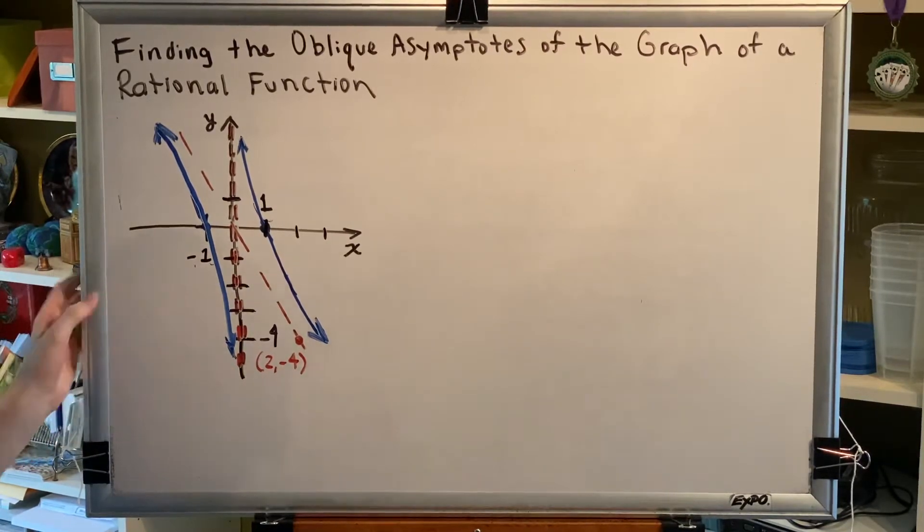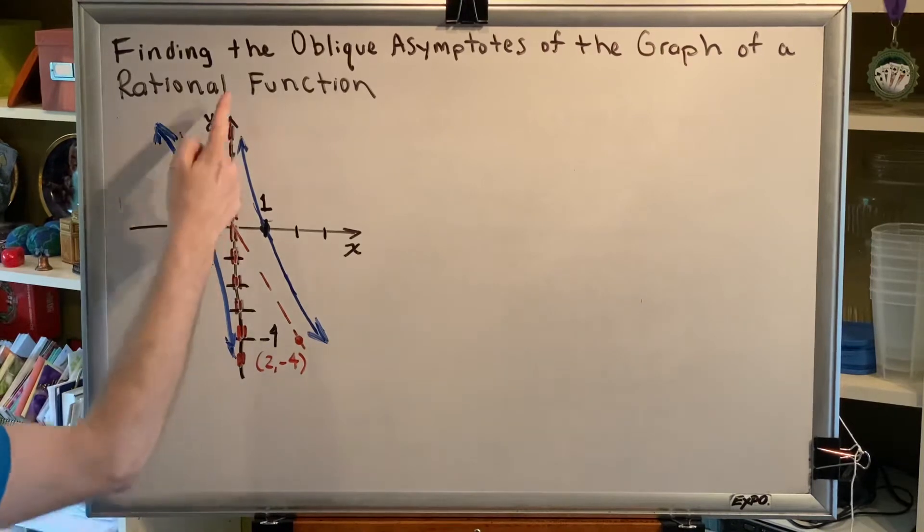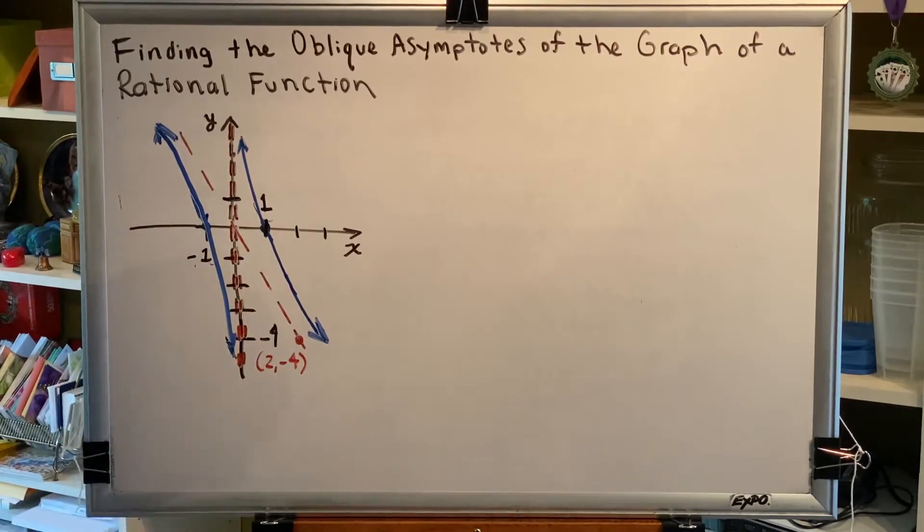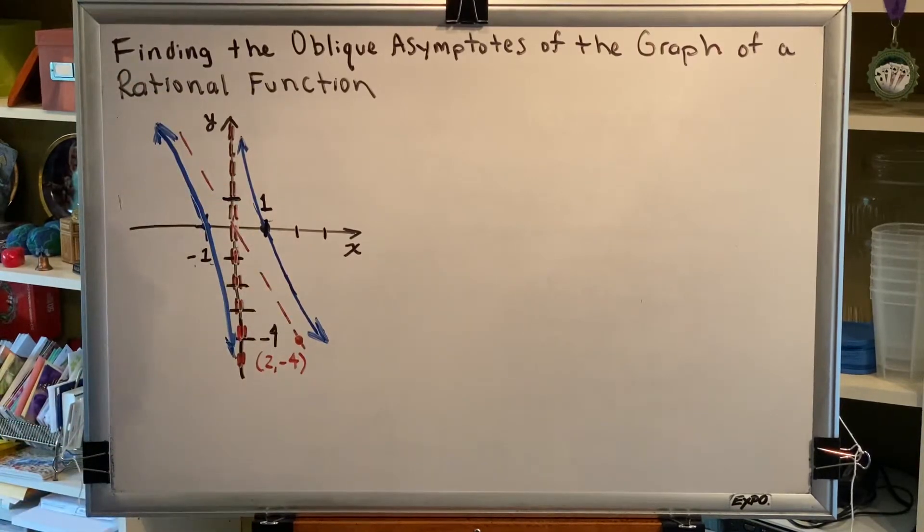We're provided with a graph and we're asked to find the oblique asymptote. So this graph has two asymptotes. Sitting on top of the y-axis is a vertical asymptote, and this tilted or slanted dashed line here is the oblique asymptote and we need to find its equation.